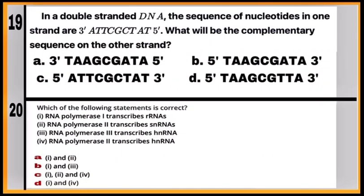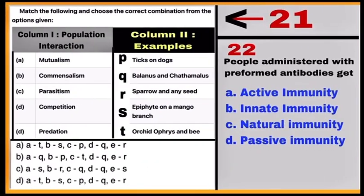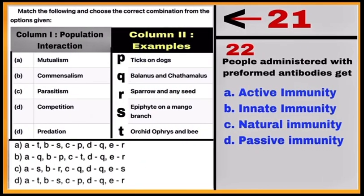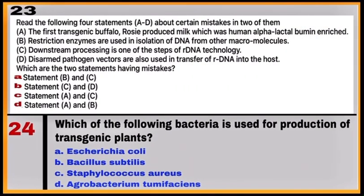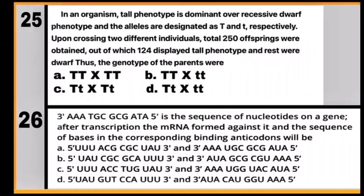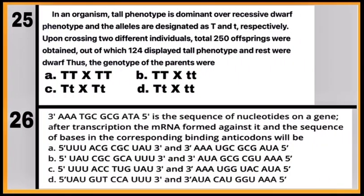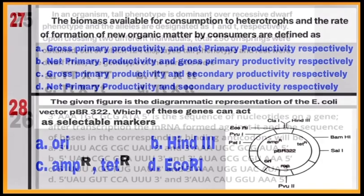Question 19 is based on the structure of DNA, and question 20 is based on the transcription process. Match population interaction with appropriate examples in question 21. Solve questions 23 and 24. Question 25 is based on test cross.